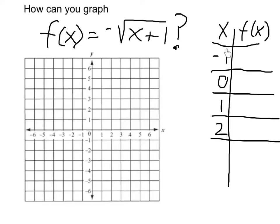So let's say x were negative 1. If I plug negative 1 here, I get 0. Square root of 0 is 0 and the negative is not going to affect it. So when x is negative 1, f(x) is 0.